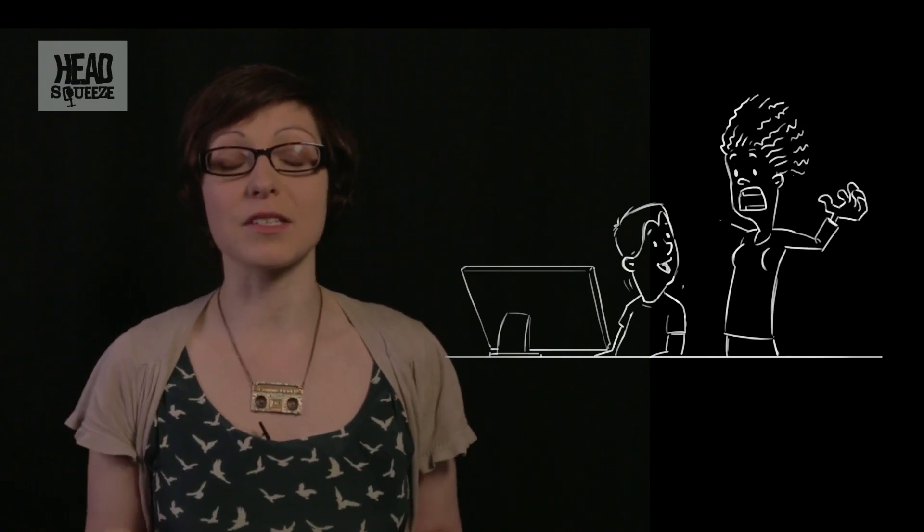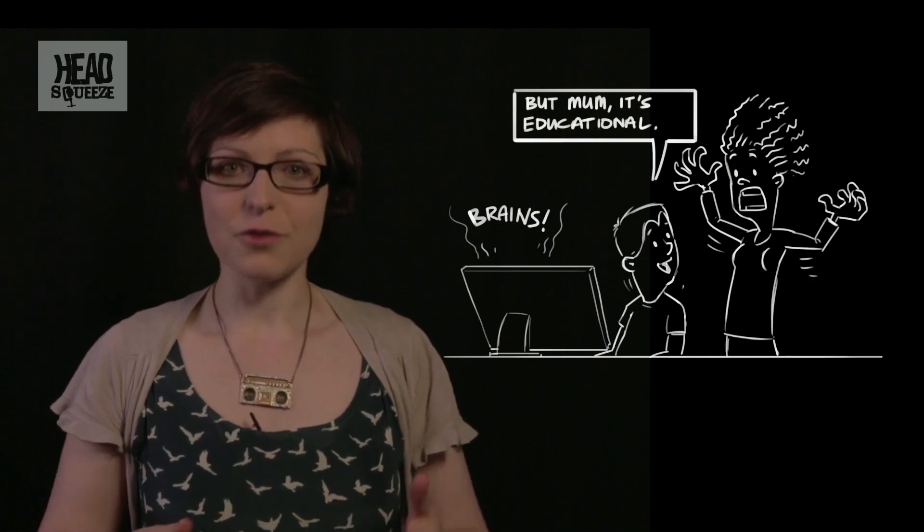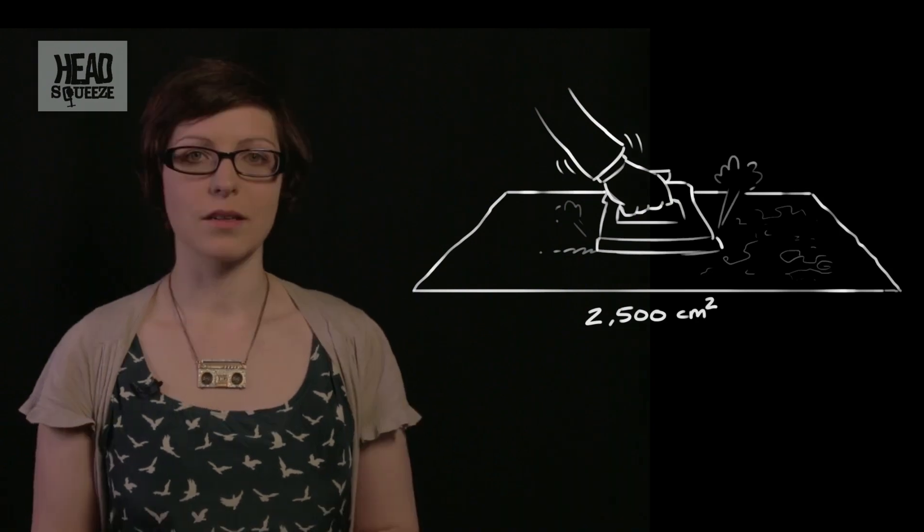It's only four millimetres thick, but it's so folded and ridged and tightly packed that if you spread the whole thing out, your cerebral cortex would cover 2,500 centimetres squared. That is the size of an unfolded newspaper. So that's a big area and an impressive packing technique.